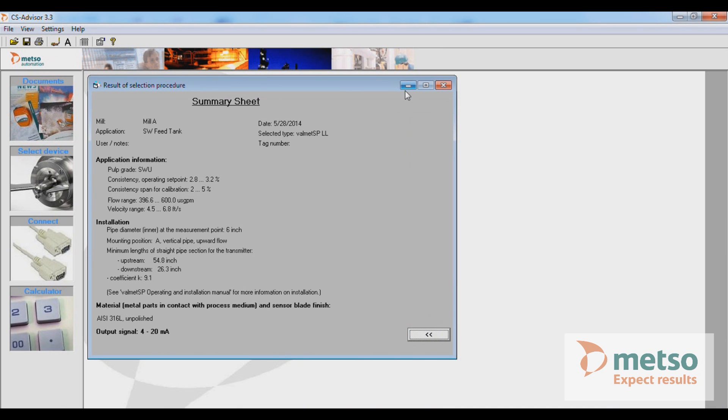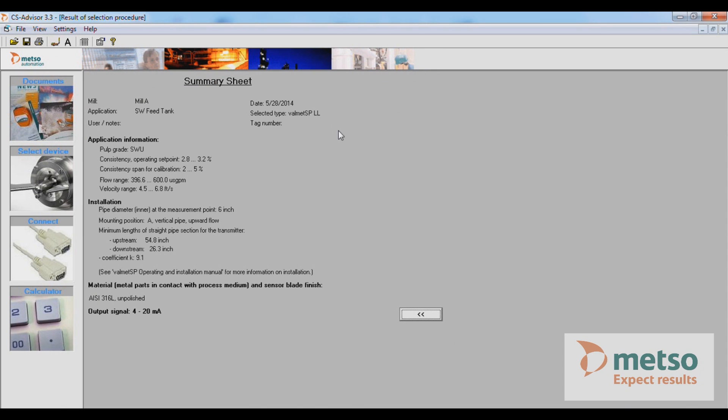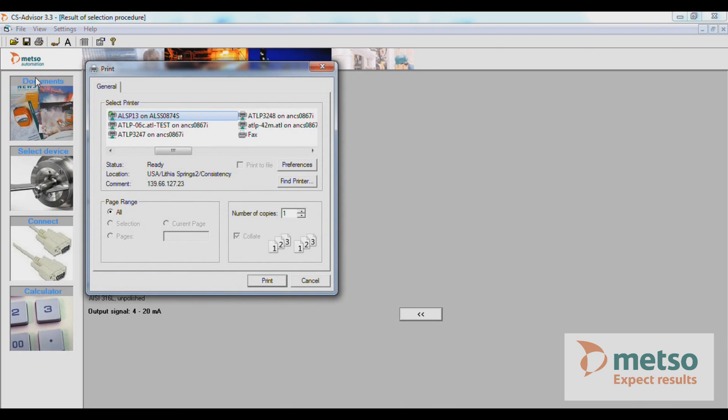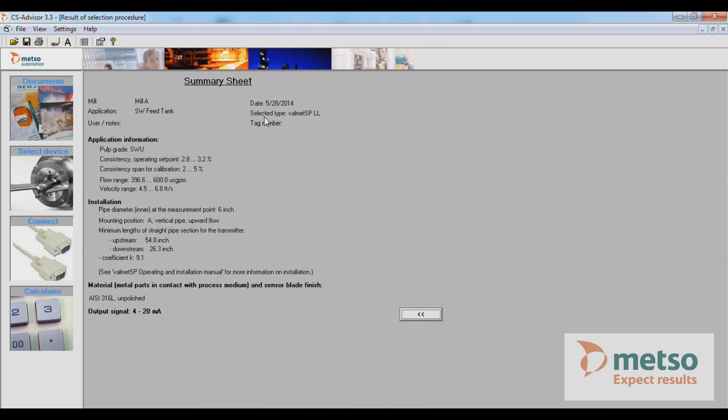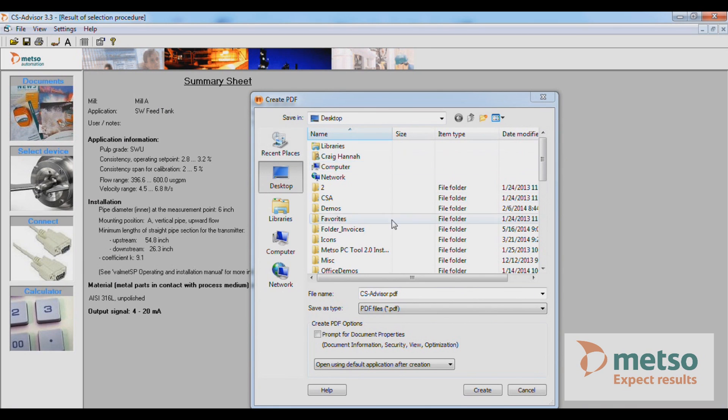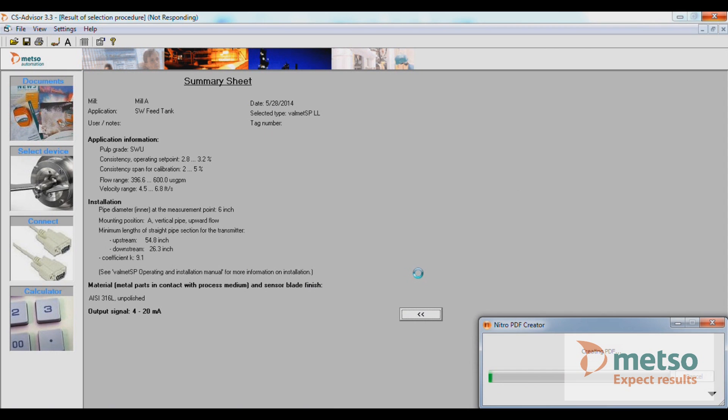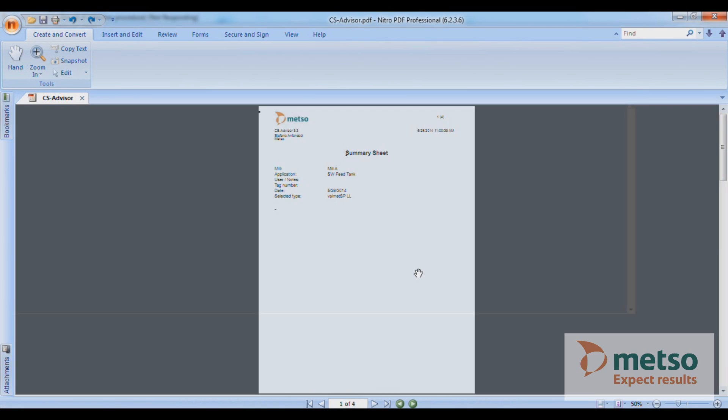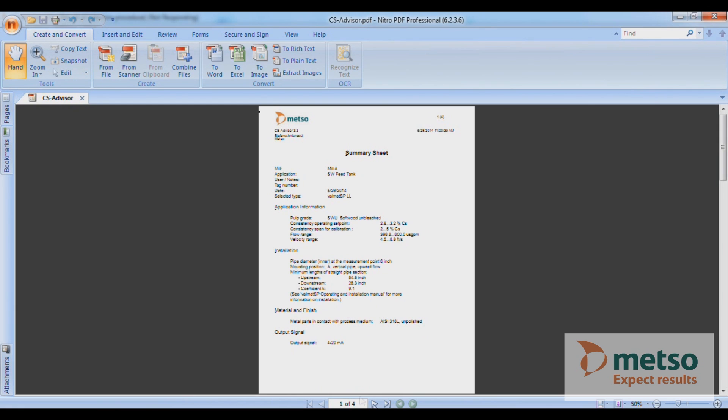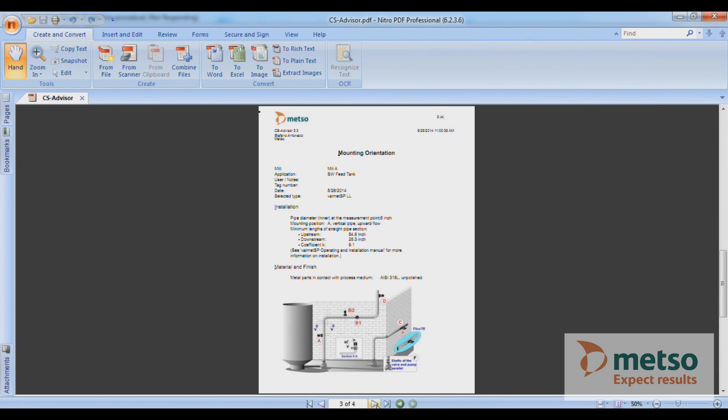Here's a summary sheet, and if you want to print these summary sheets, all four sheets, you just simply go up to file, print all, and you select a PDF program. I'm going to save mine on desktop. I'm going to leave the default file name there and just simply create. And there you go.